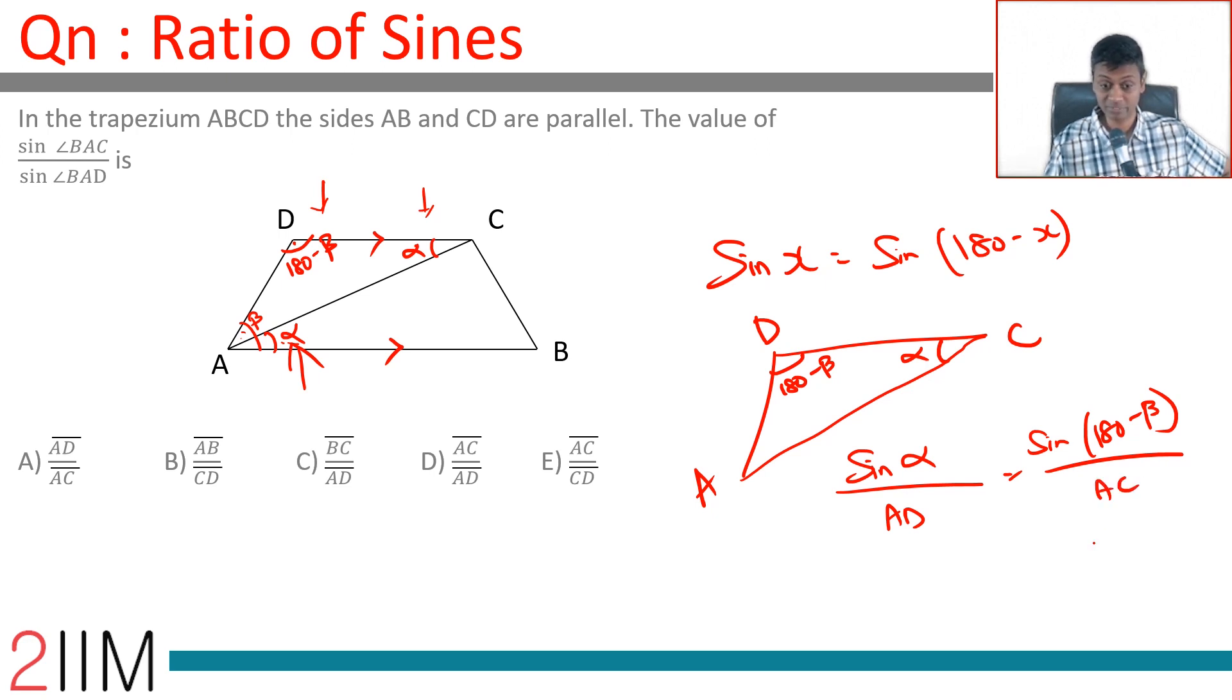We are through, we are clearly through. Sine alpha by sine of 180 minus beta is AD by AC. Bringing this here, sine of 180 minus beta is sine of beta.